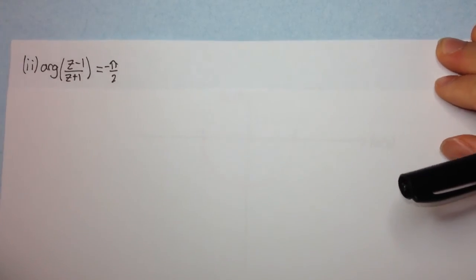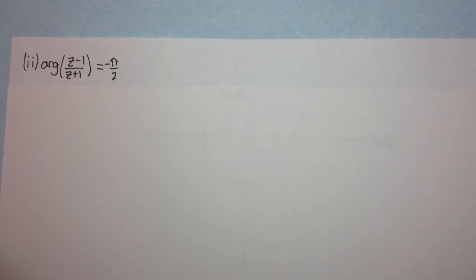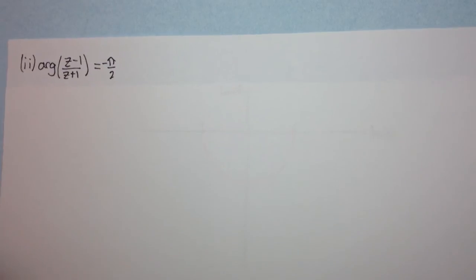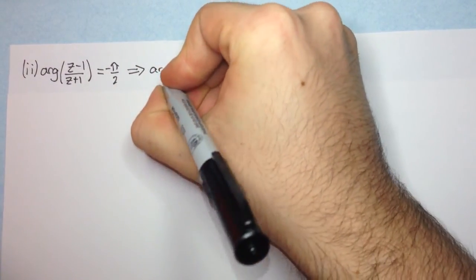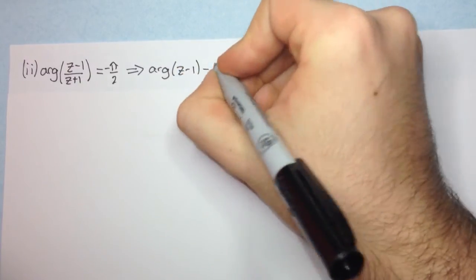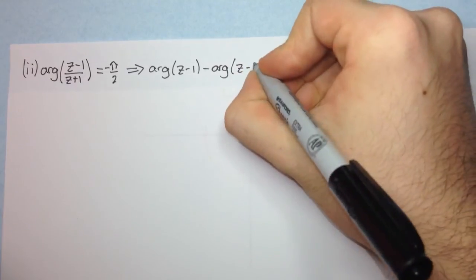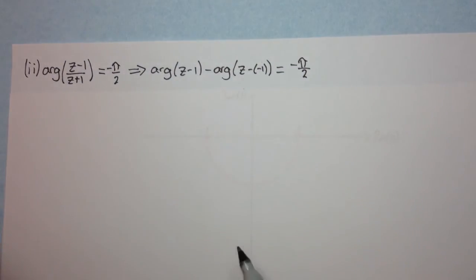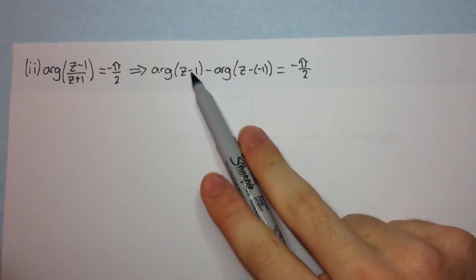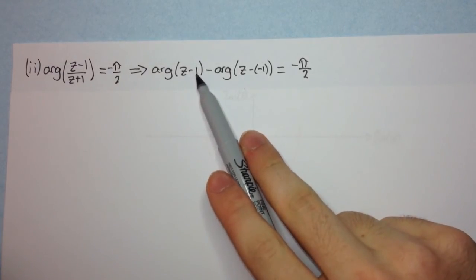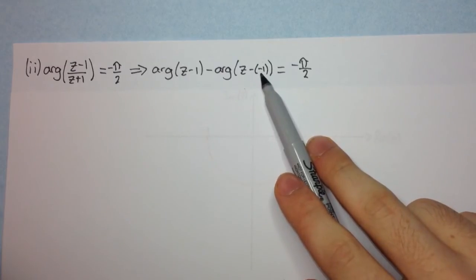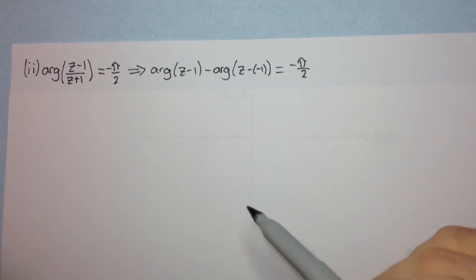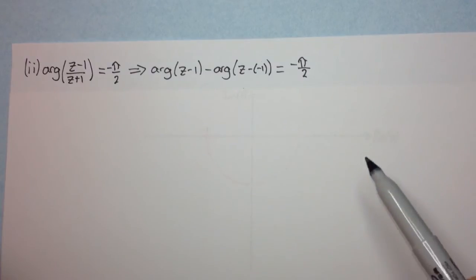The second part is the argument of z minus 1 over z plus 1 equals minus pi on 2. We can put this into standard form: the argument of z minus 1 minus the argument of z minus negative 1, equal to minus pi on 2. Here we still have an arc of a circle which starts at 1 plus 0i and goes to the complex number minus 1 plus 0i, but this angle is negative. So instead of going in the anti-clockwise direction, we're now going from 1 to minus 1 in the clockwise direction.